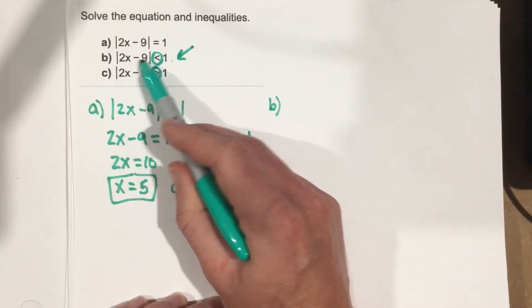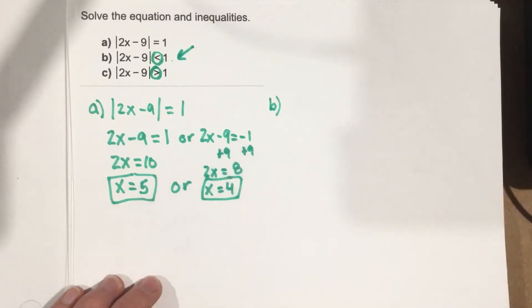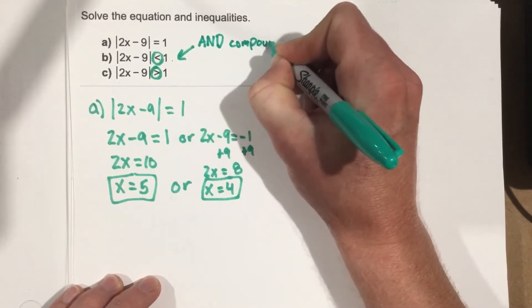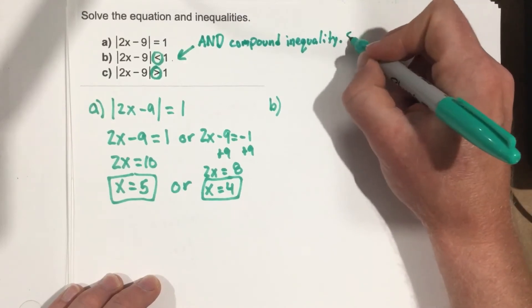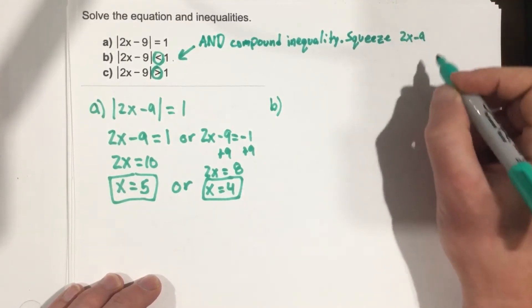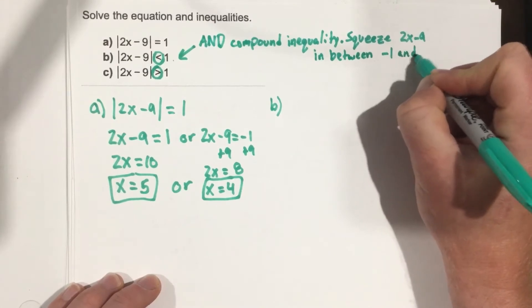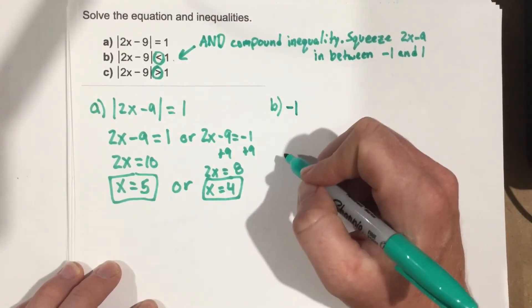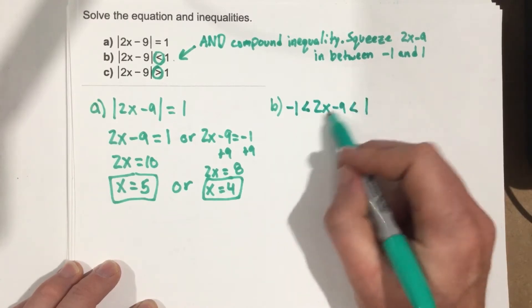Anytime you see a less than after the absolute value signs, so absolute value less than, there's a special property that you can use. We can set this up as an and compound inequality. What does that mean? It means to squeeze 2x minus 9 in between negative 1 and 1. So we're going to say that negative 1 is going to be less than 2x minus 9, which is less than 1. So you can see we end up with a compound inequality here.